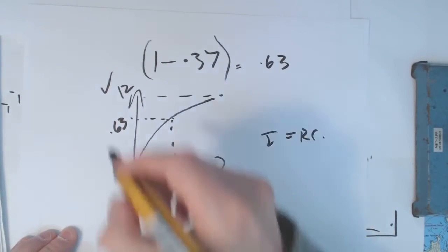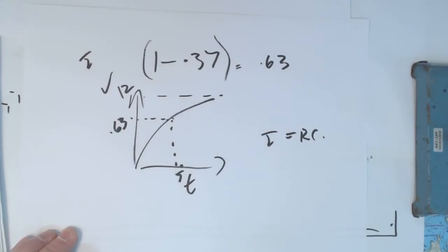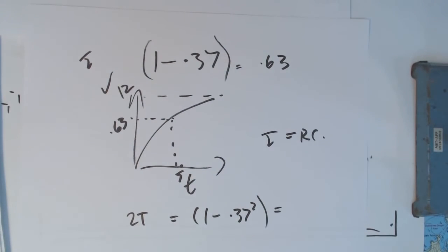What about two time constants? So that was one time constant. Two time constants is equal to 1 minus 0.37 squared. All right. Now we said 0.37 squared is equal to 14%. So that equals 0.86.